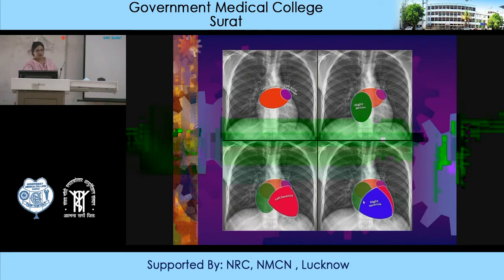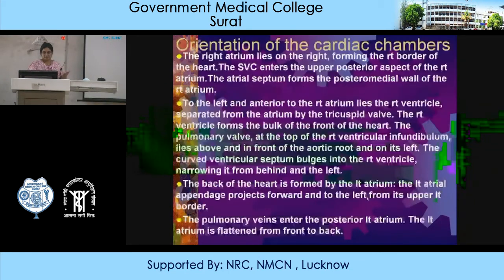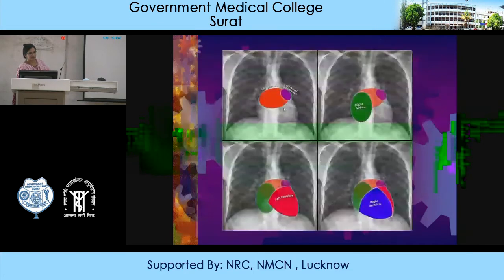Coming to the back of the heart, which is formed by the left atrium: the left atrial appendage projects forward and to the left from its upper left border. The pulmonary veins enter the posterior left atrium. The left atrium is flattened from front to back. This is the left atrium situated on the back side, anterior to the spine, and this is the left atrial appendage which projects onto the left side.